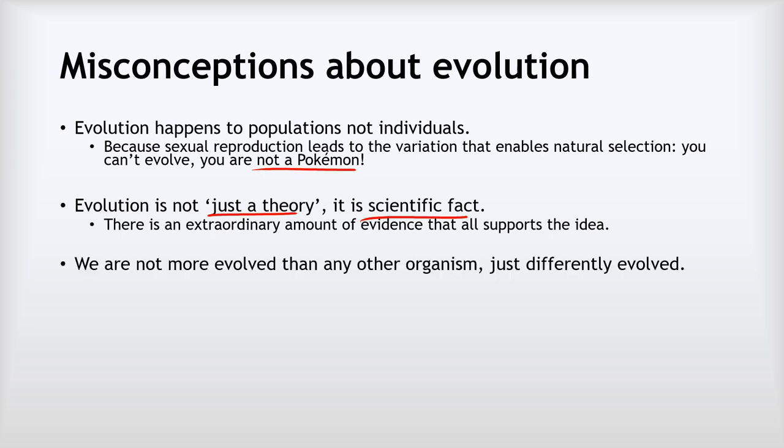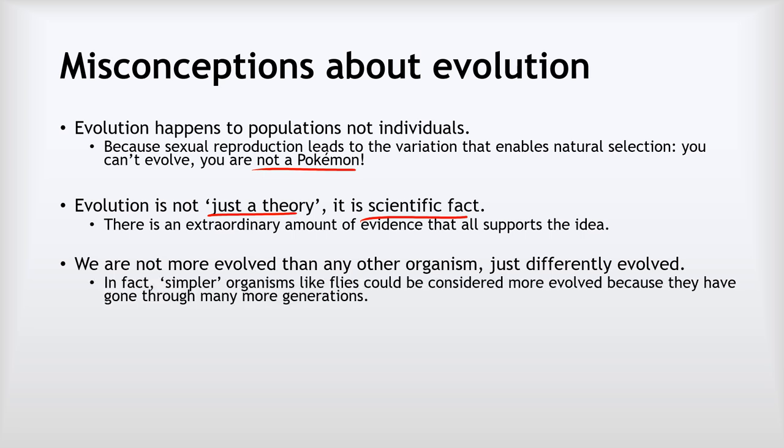Next misconception is around how evolved we are compared to other organisms. I don't want to burst your bubble, but you are no more evolved than an ant. You're just differently evolved. In fact, if you think about something like an ant or a fly, because those organisms reproduce far more quickly and have generations many times a year rather than once every 15-20 years, in some ways, because they've gone through more generations, we can think of them as being more evolved. It's not really about some species being more or less evolved—it's just that we're all differently evolved to meet different needs within the environment.